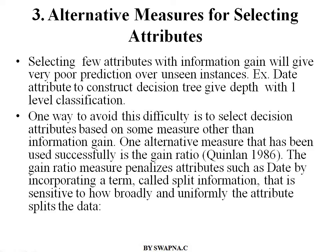What is the third issue? Alternative Measures for Selecting Attributes. In the ID3 algorithm, generally to select the attribute and to construct the tree, we are using the statistical property of information gain. But selecting attributes with this information gain will give very poor prediction over unseen instances.